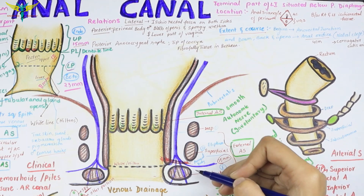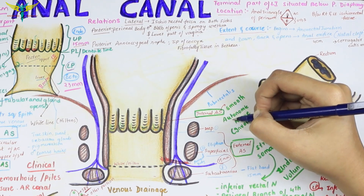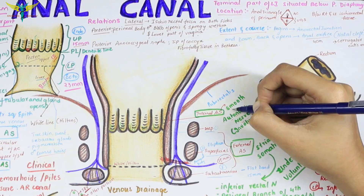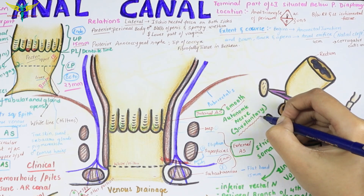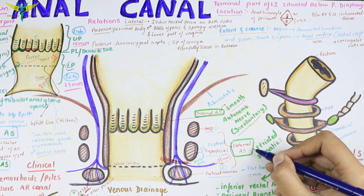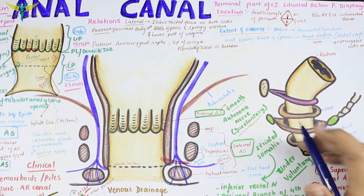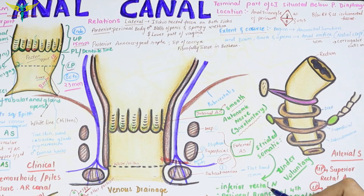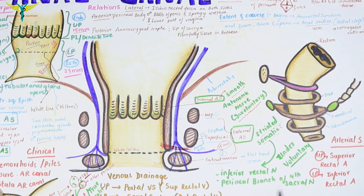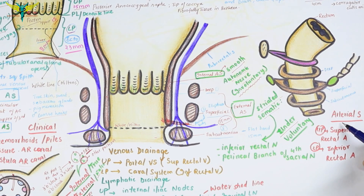The internal anal sphincter is supplied by the autonomic nervous system, as it is composed of smooth muscle, and is therefore involuntary. The external anal sphincter is composed of striated muscle and has somatic nerve supply from the inferior rectal nerve and the perineal branch of the 4th sacral nerve, placing it under voluntary control.